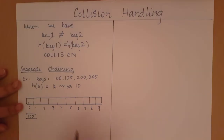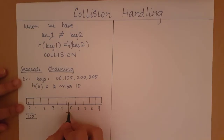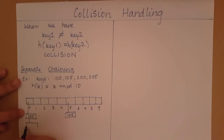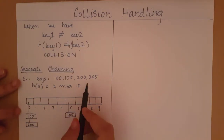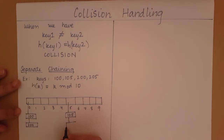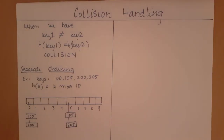Let's go to 105. 105 mod 10 is equal to 5. So, I am going to go to index 5. At this index, I will start a linked list with my value 105. Then, I will go to 200. 200 mod 10 is equal to 0. I will go to index 0 and add it to the end of the linked list, after 100. Now, I will have 205. 205 mod 10 is equal to 5. I will go to index 5 and add it to the end of the linked list present at index 5. This is how separate chaining works.